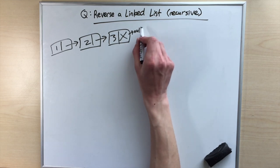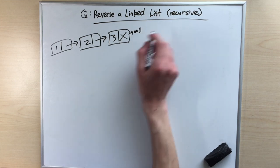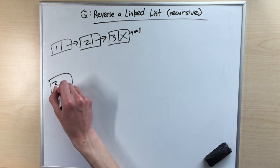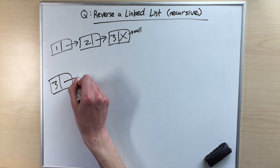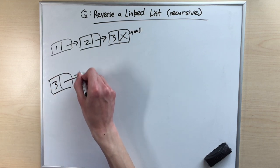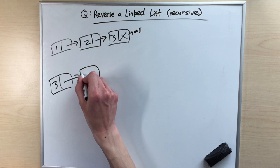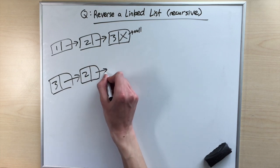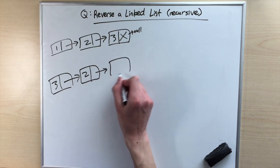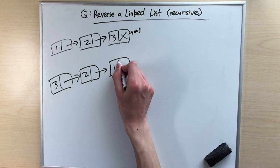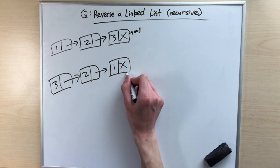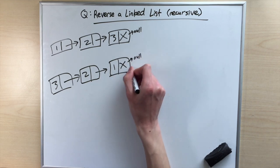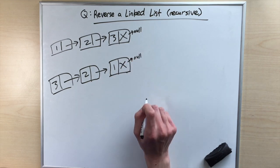The question wants us to reverse this linked list. So after it's reversed, it should look like this: the node containing 3 is at the front, points to the node containing 2, which stays in the middle, and that points to the last node which now contains 1. This last node points to null, so it's the end of our linked list.